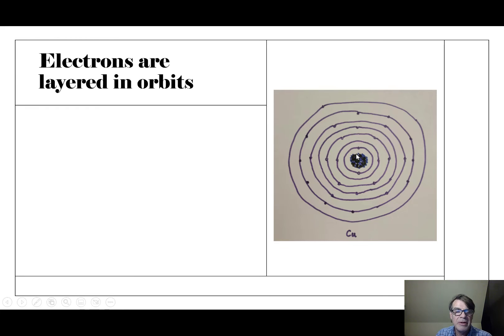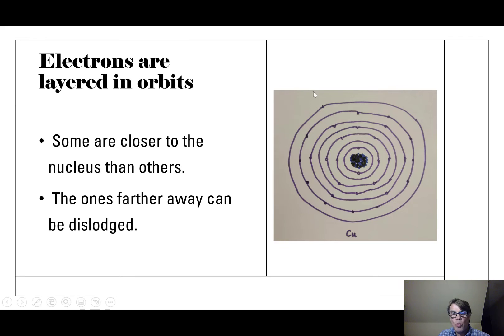You don't need to know these things to be able to do electricity stuff, but the electrons are in layers. So some electrons are closer to the nucleus than others. Again, this isn't exactly right, it's like half right or maybe three quarters right.